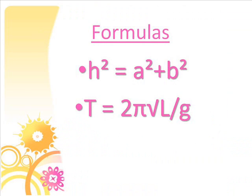The formulas shown here are h squared equals a squared plus b squared, and T equals 2 pi times the square root of L over g. These are the two formulas that are needed in the process of finding the period of a pendulum.